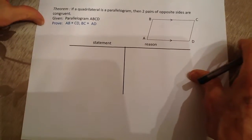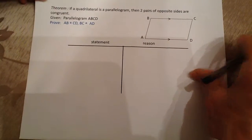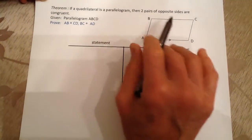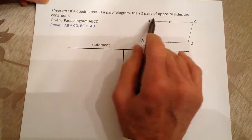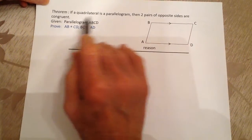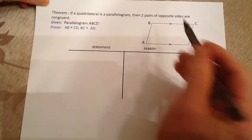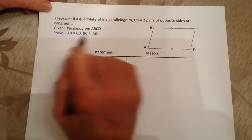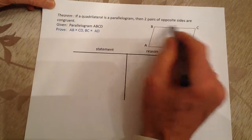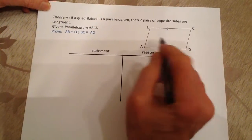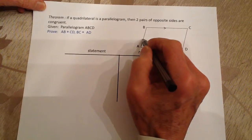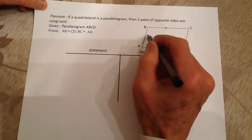Today we're going to prove the theorem: if a quadrilateral is a parallelogram, then two pairs of opposite sides are congruent. We have given a parallelogram ABCD and we want to show that AB is going to be congruent to CD.